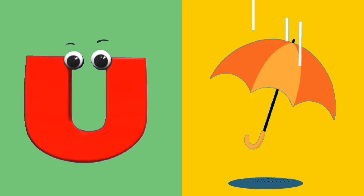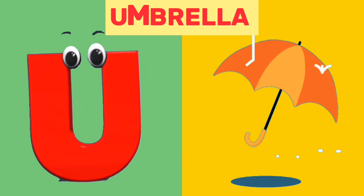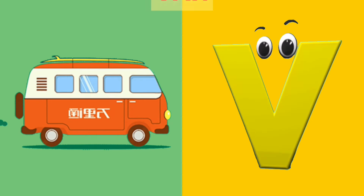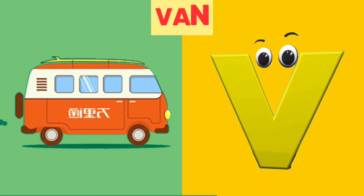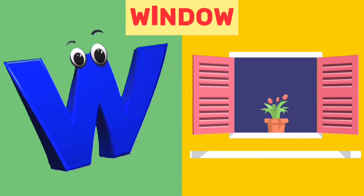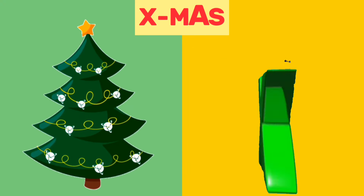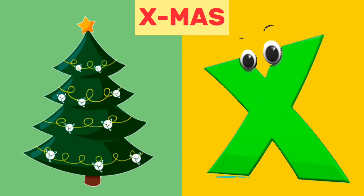U is for umbrella. U, u, umbrella. V is for van. V, v, van. W is for window. W, w, window. X is for Xmas. X, X, Xmas.